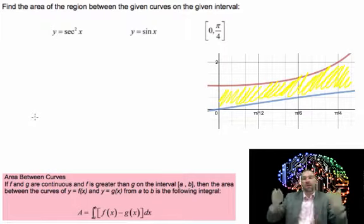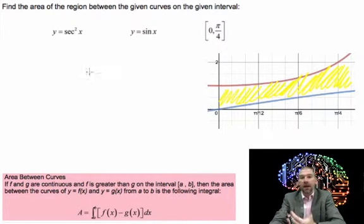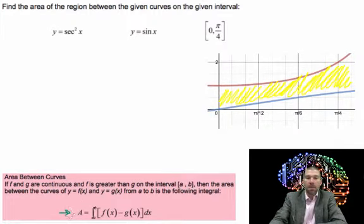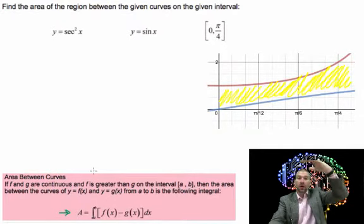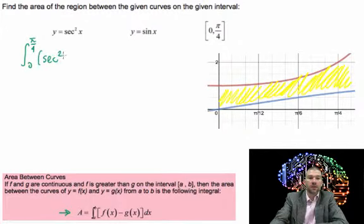It's the same idea as having a big rectangle and a little rectangle — big area minus little area. You do that by integrating your upper function f(x) minus your lower function g(x). So for this particular problem, we would integrate from 0 to pi over 4, secant squared x minus sine x, dx.